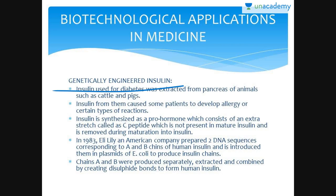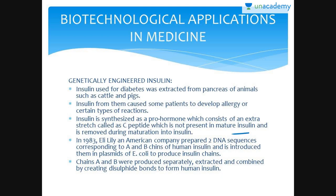Regarding biotechnological applications in medicine, the genetically engineered insulin: insulin used for diabetes was previously extracted from the pancreas of animals such as cattle and pigs, and caused some patients to develop allergy or reactions. Insulin is synthesized as a prohormone which consists of an extra stretch called a C-peptide, not present in mature insulin, which is removed during maturation. In 1983, Eli Lilly, an American company, prepared two DNA sequences corresponding to the A and B chains of human insulin.